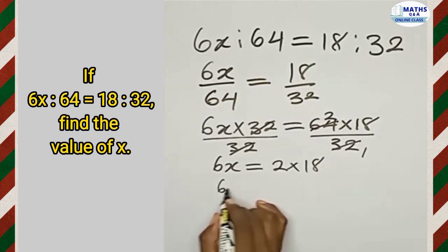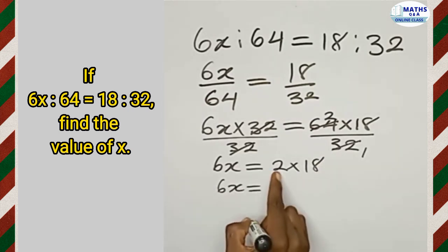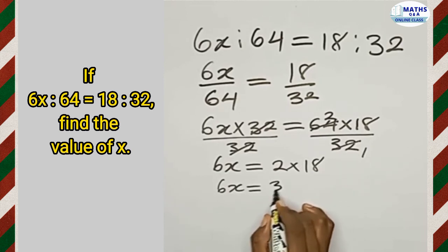Now 6x is equal to 2 multiplying 18, which is going to give us 36.